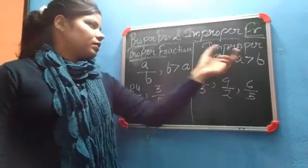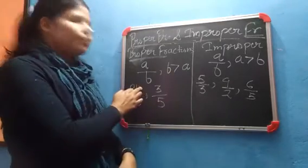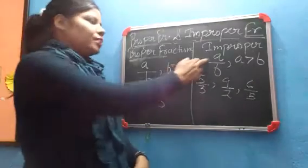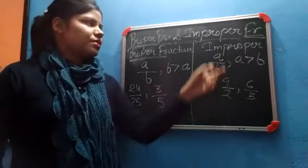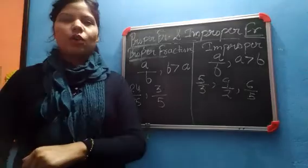Then there is a little bit change. Here our denominator is greater than numerator and improper fraction are those fraction which numerator is greater than denominator.